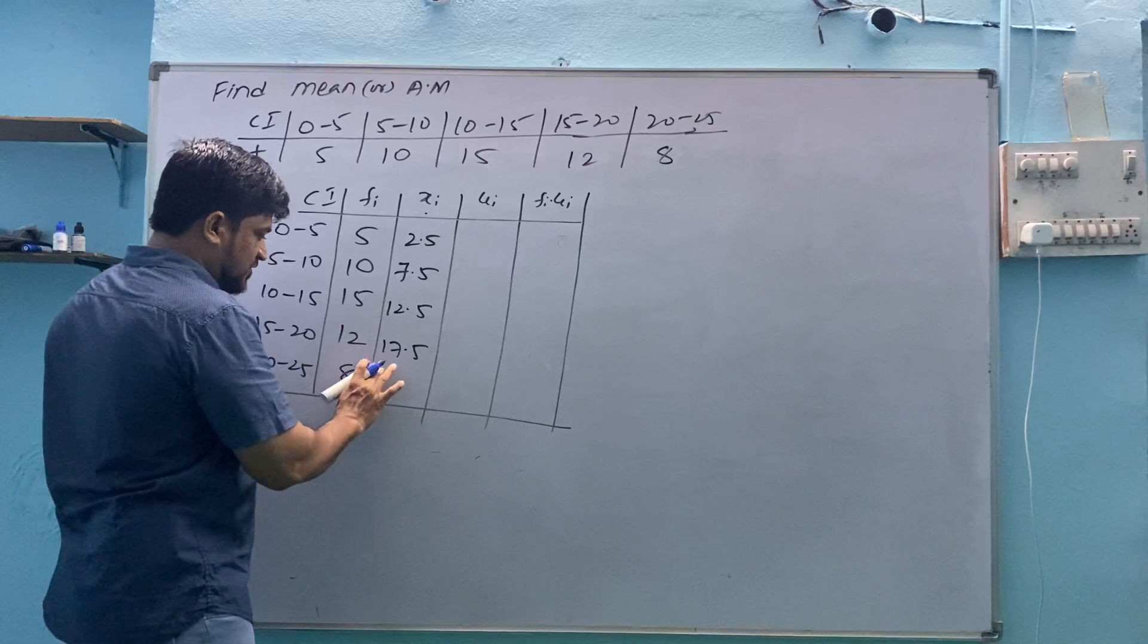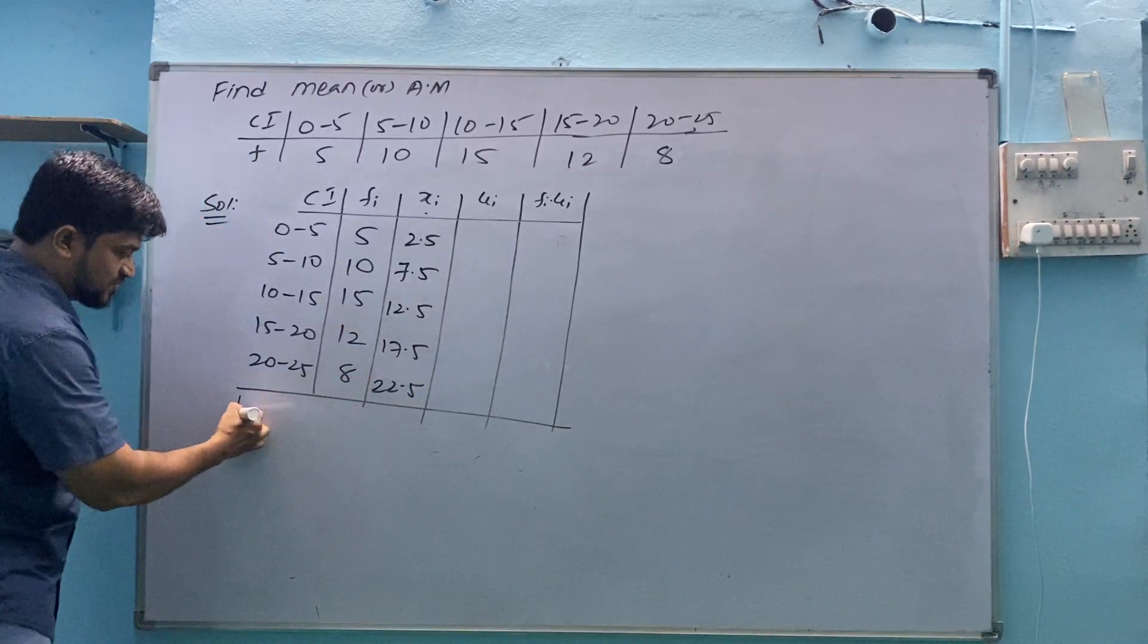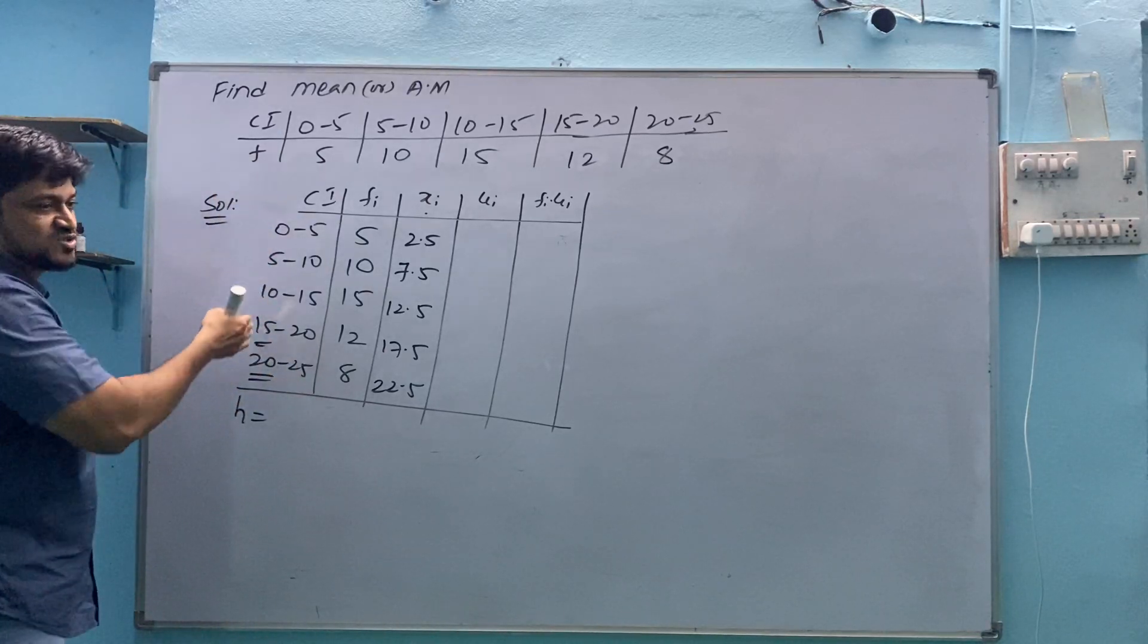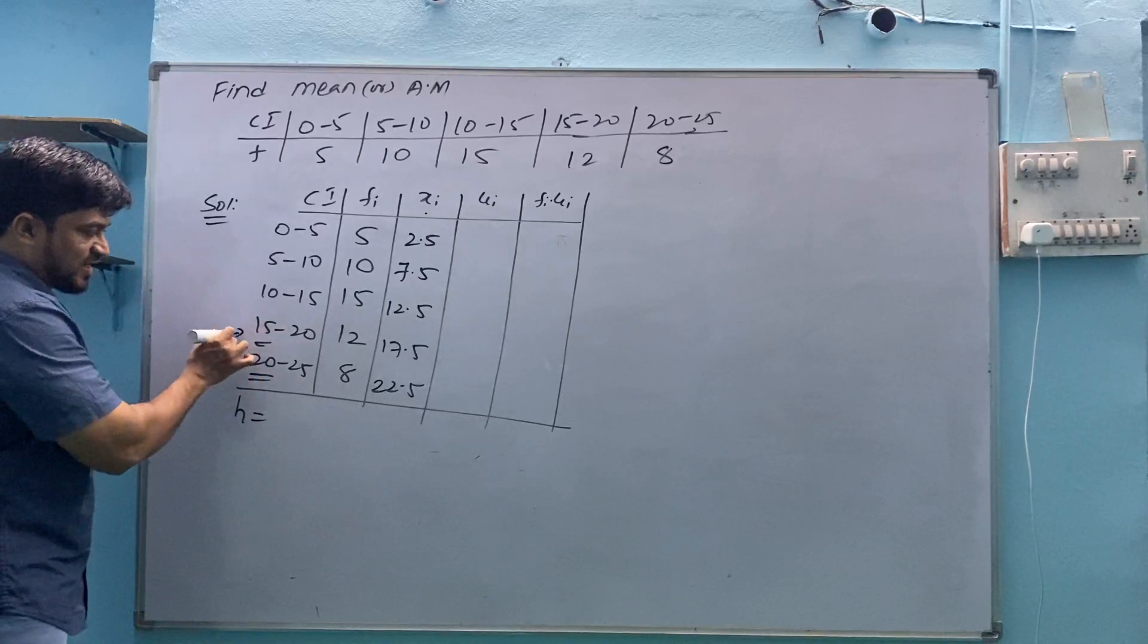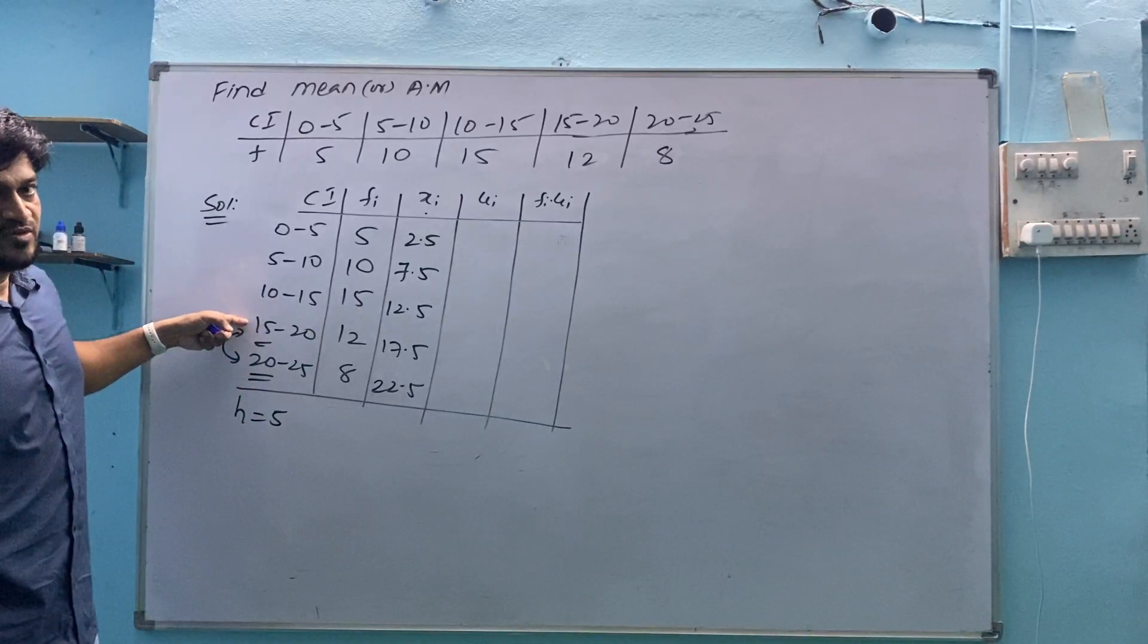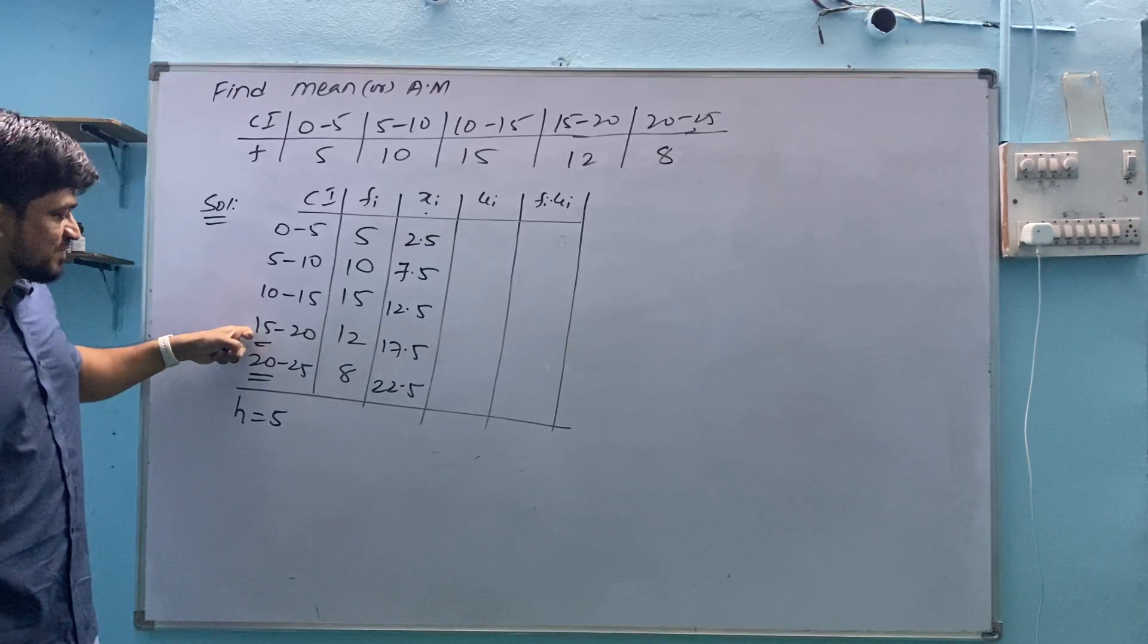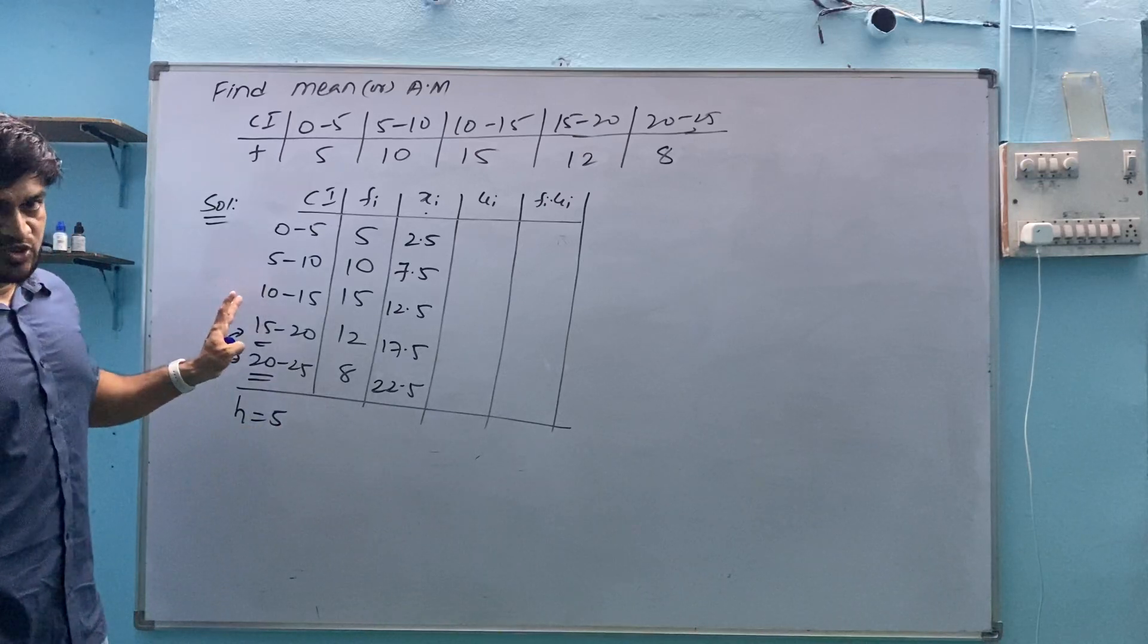Then 5 plus 10 is 15 divided by 2 is 7.5. Similarly 12.5, 17.5, then 22.5. We get this because of the H value. H means length of the class, height of the class, difference of the classes. 20 minus 15, always subtract these two values, that is 5. Don't subtract 15 minus 20. Last value, upper last value, this one last one, subtraction done with the previous one.